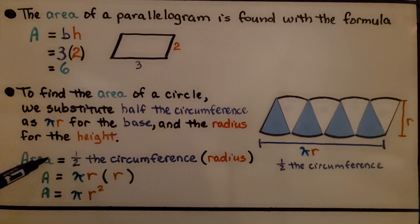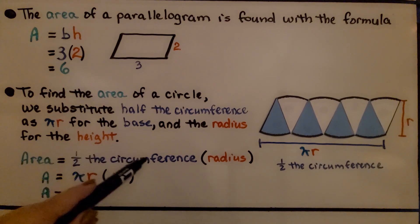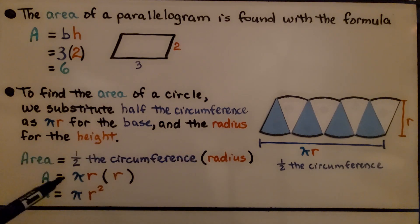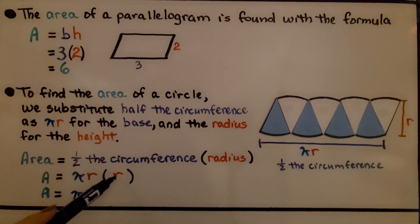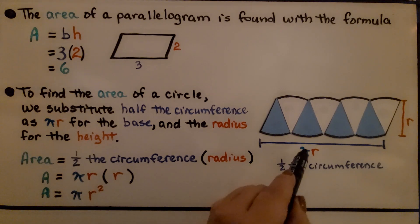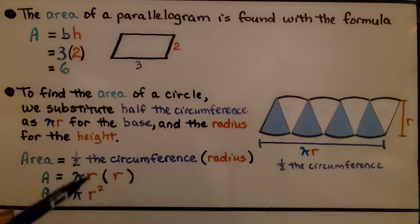We get area is equal to half the circumference times the radius, or pi r times r. See? Pi r times r. And since we have r times r, we can write it as r to the second power, or r squared. That means the area of a circle is equal to pi r squared.